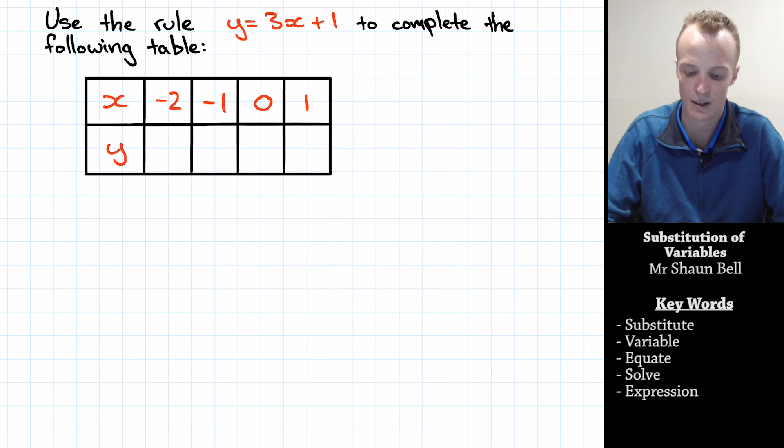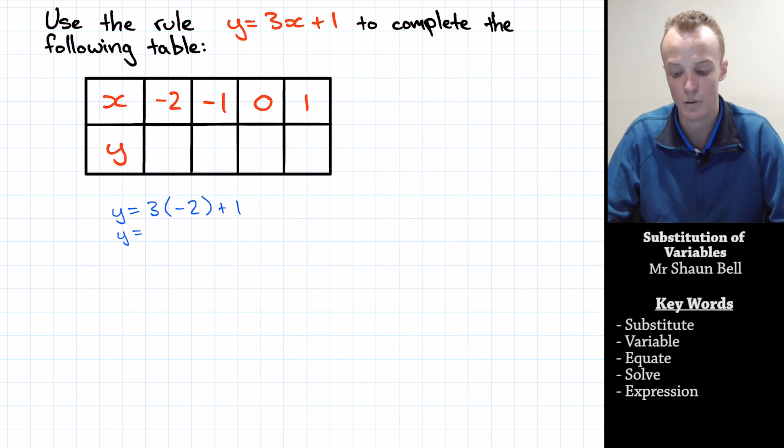Well, let's start using substitution when x is equal to negative 2. And I'm going to do some working out just underneath. Now y equals 3, I've just found an x, need to substitute or replace it with negative 2 plus 1. Now our y is going to equal 3 times negative 2 which is negative 6 plus 1 which is going to be negative 5. So y is equal to negative 5 when x is negative 2.